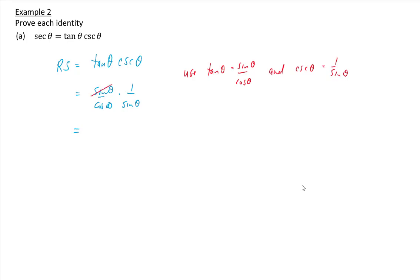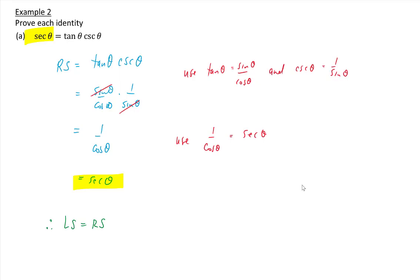...1 over sinθ, using the reciprocal identity cscθ equals 1 over sinθ. Notice we have sinθ in the top and in the bottom, so we can cancel those, and we're left with 1 over cosθ. We can use another identity: 1 over cosθ is equivalent to secθ. So the right side equals secθ, which is equal to the left side. Therefore left side equals right side — QED.